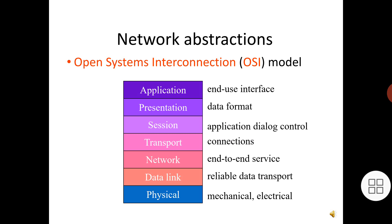The International Standards Organization developed the OSI model to help understand networks. The seven layers of the OSI model are intended to cover a broad spectrum of networks and their uses. Some networks may not need the services of one or more layers — higher layers may be totally missing or an intermediate layer may not be necessary. However, any data network should fit into the OSI model. The OSI layers are described from lowest to highest level of abstraction.